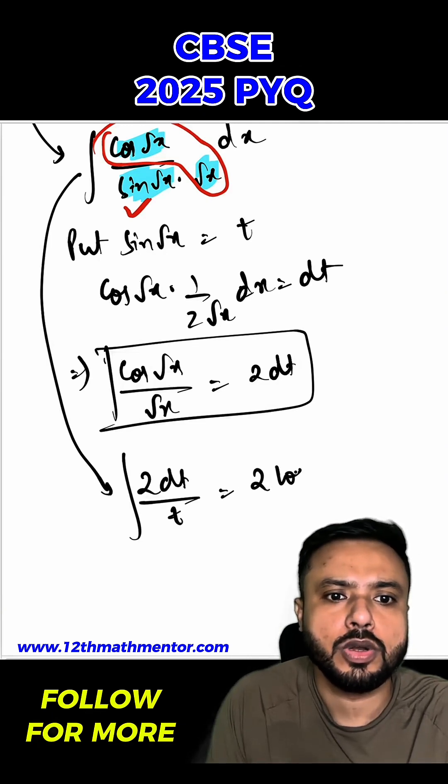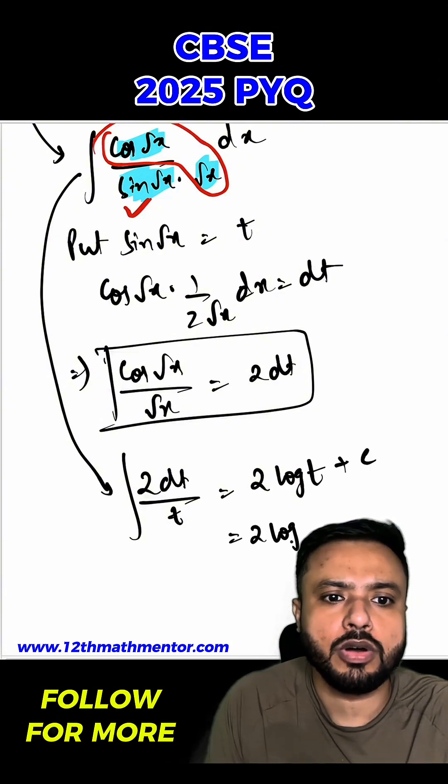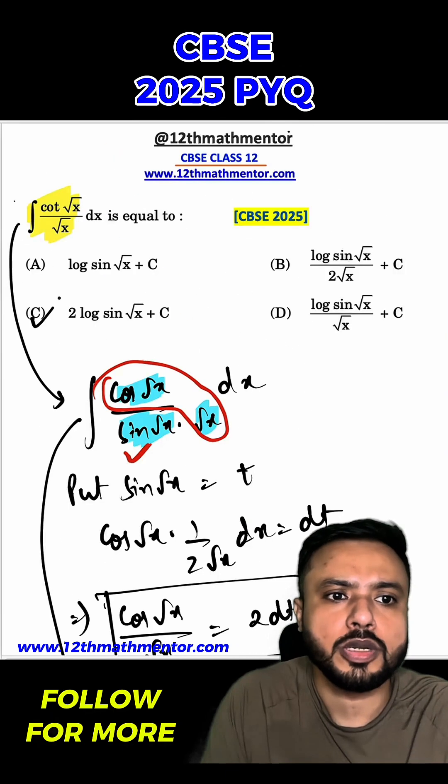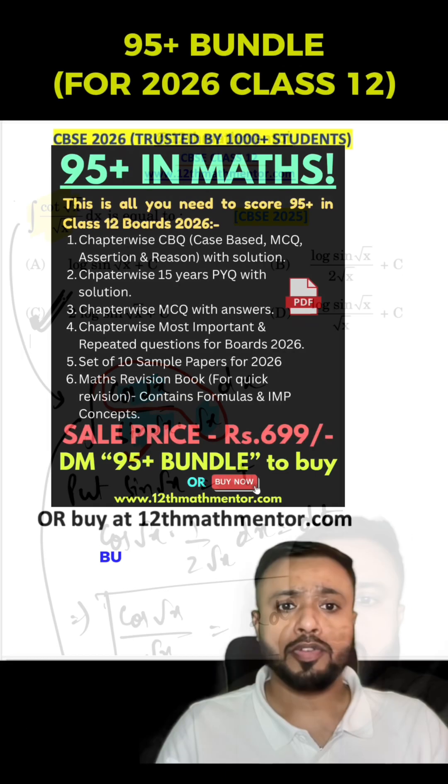When we integrate it, you'll get 2 log of t plus c, and log t will be equal to log of sin of root x plus c. So option C is the correct answer for this question.